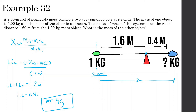We can verify this is proportional: 4 kilograms times 0.4 meters equals 1.6, and 1 kilogram times 1.6 meters also equals 1.6. So it's proportional — the system balances correctly at the center of mass.